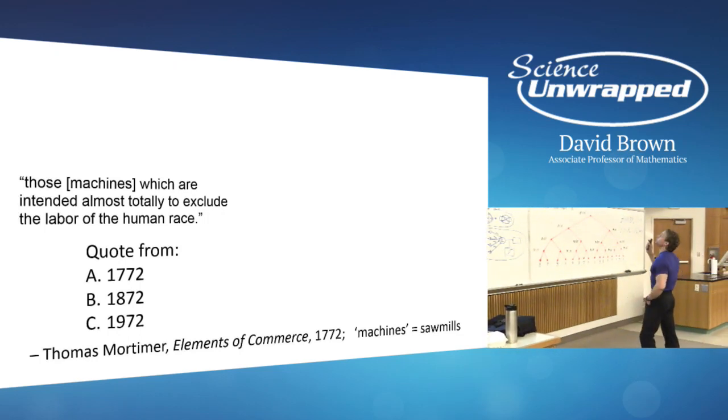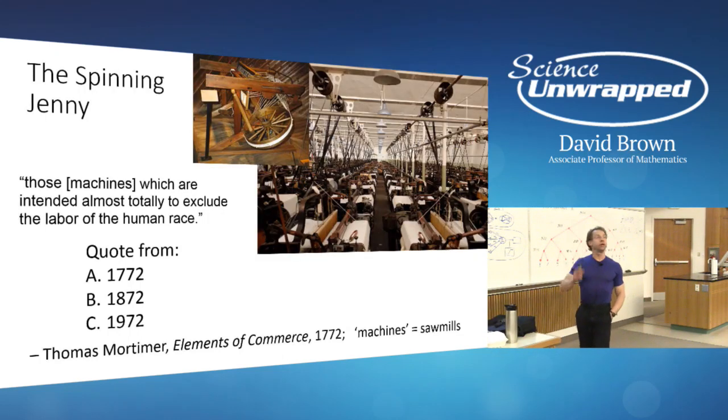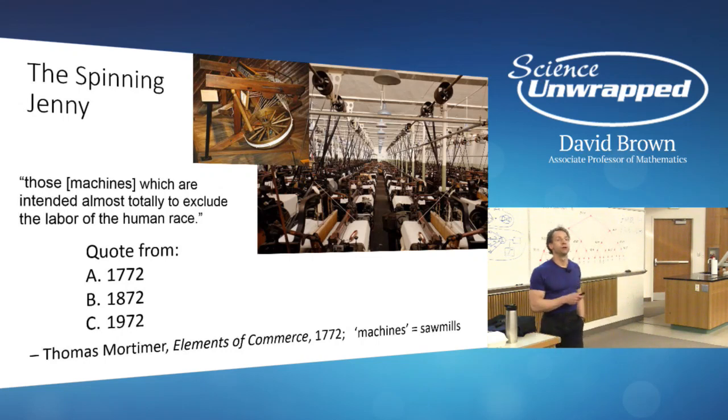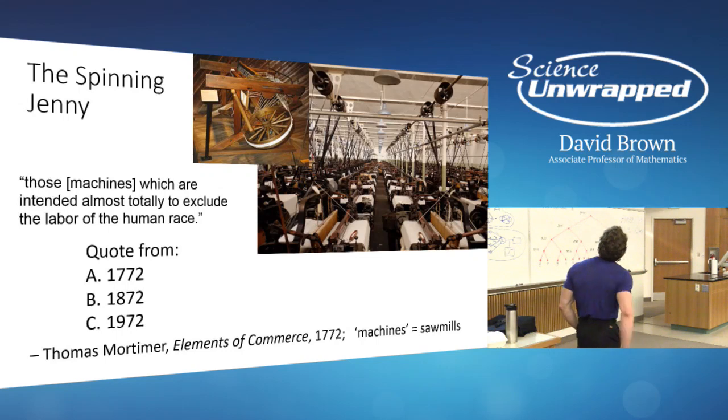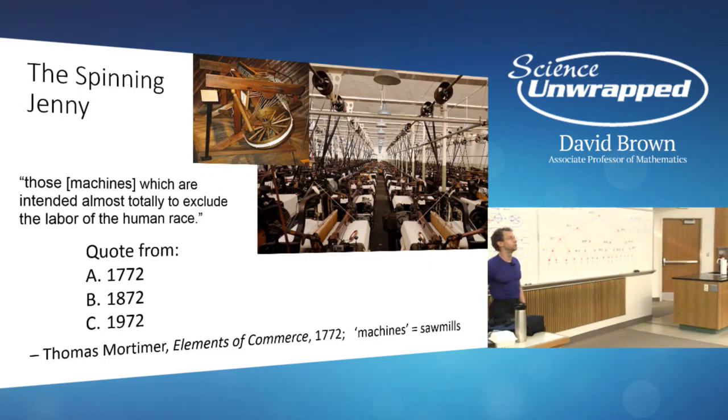But before sawmills, there was the spinning jenny, which is where the Luddites came from. The spinning jenny was invented to help us with the making of fabrics. It wove yarn in a very efficient way. And here's an entire freaking warehouse of spinning jennies. Not a soul in sight, unless you consider the machines to have souls.